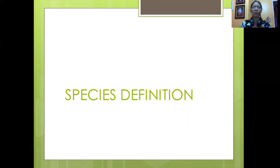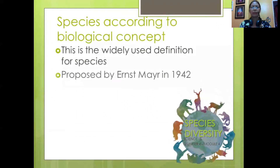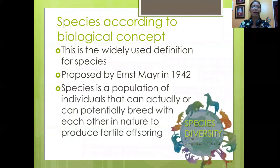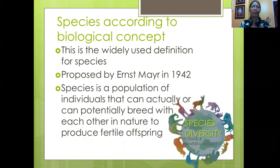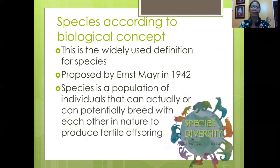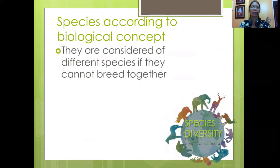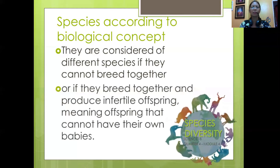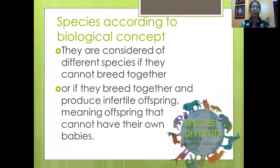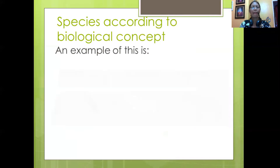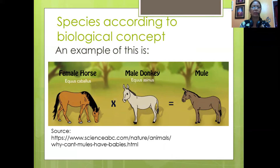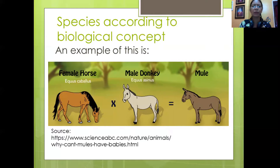What is the definition of species? According to the biological concept, this is the widely used definition. Proposed by Ernst Mayr in 1942, a species is a population of individuals that can actually or potentially breed with each other in nature to produce fertile offspring. They are considered different species if they cannot breed together, or if they breed together and produce infertile offspring — meaning offspring that cannot have their own babies. An example is a female horse (Equus caballus) and a male donkey (Equus asinus) that interbreed, producing the mule.